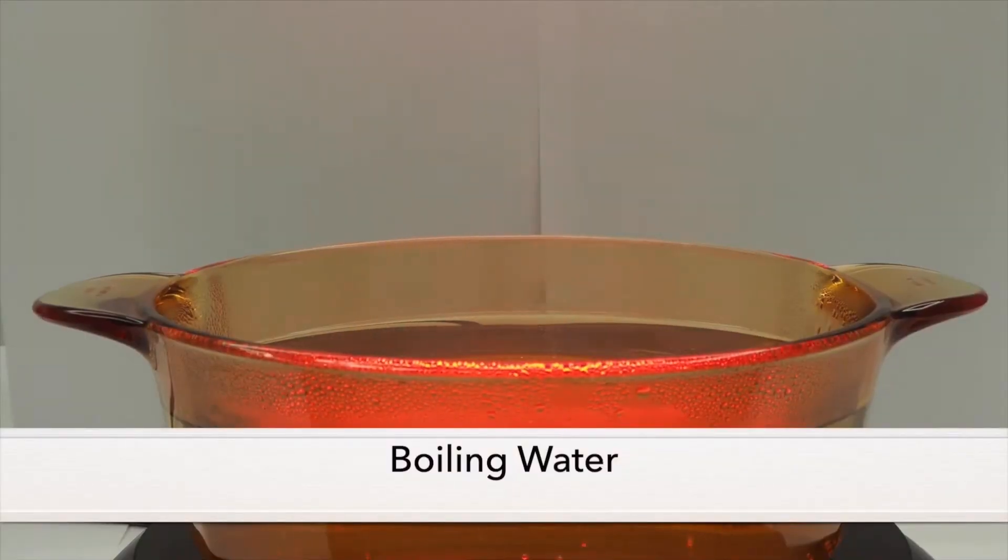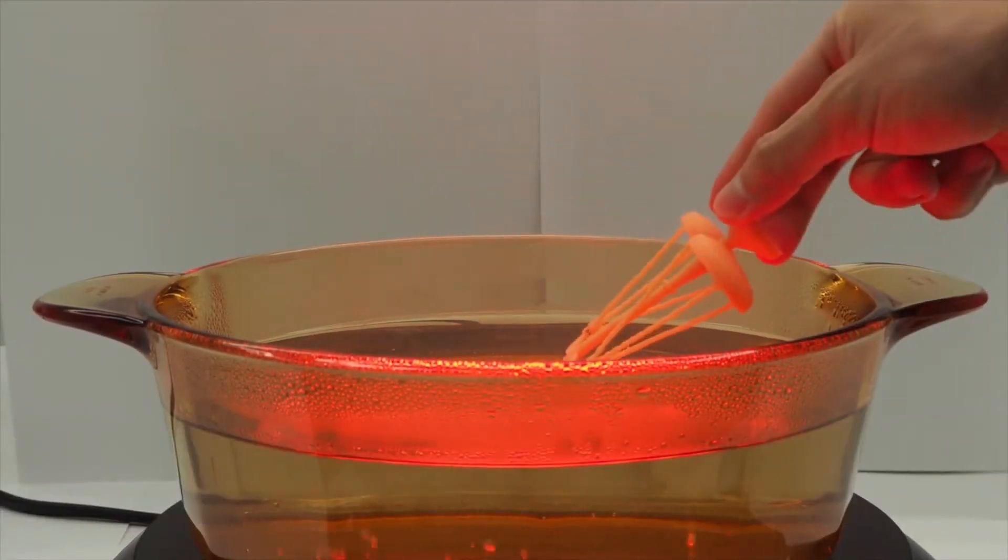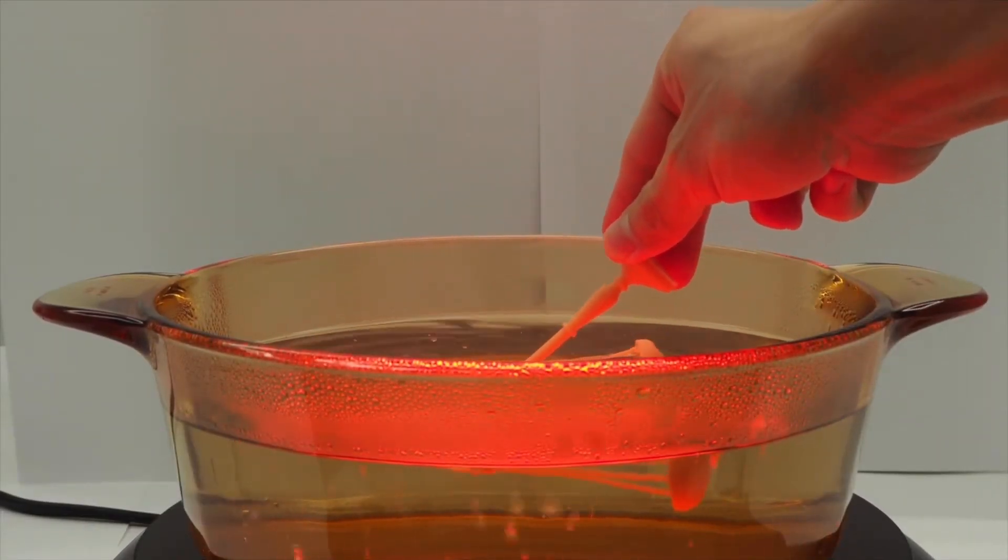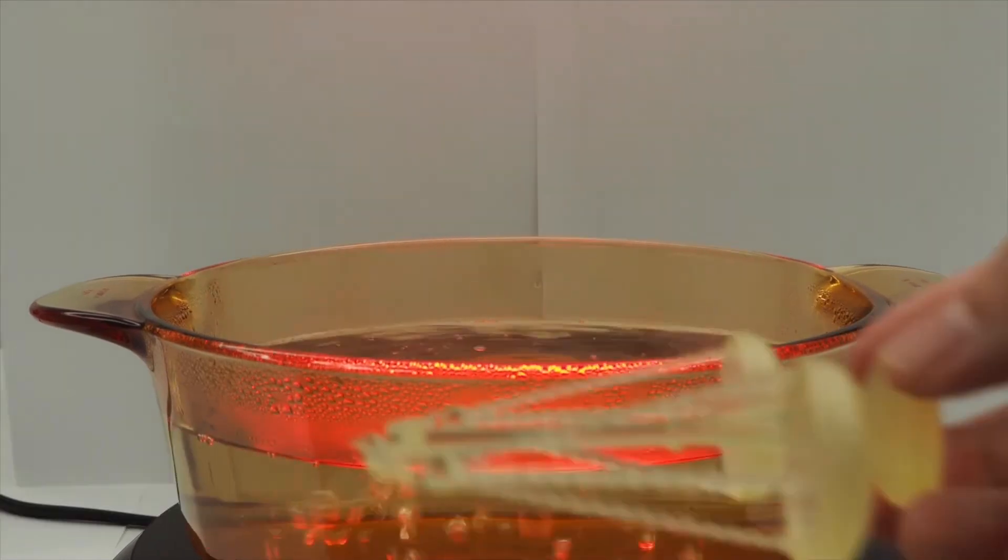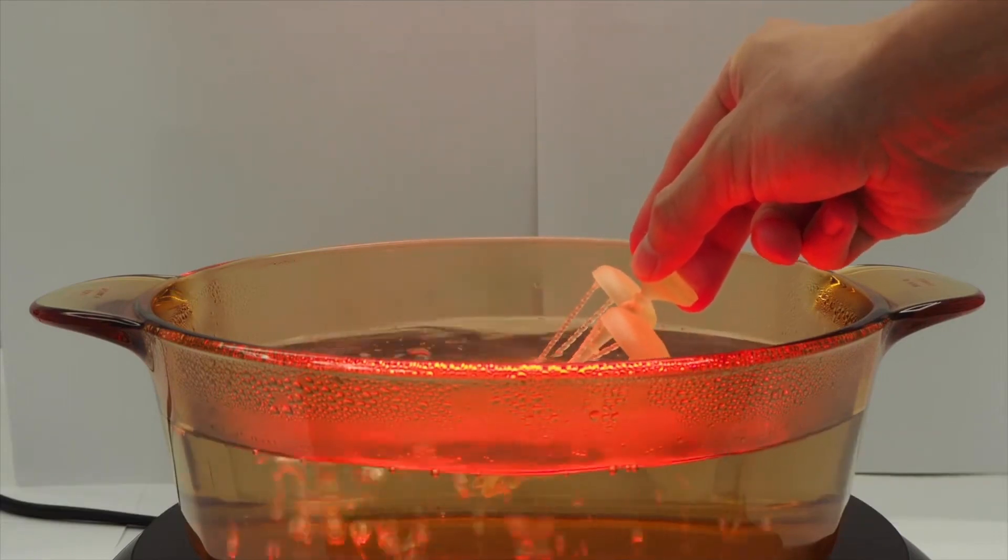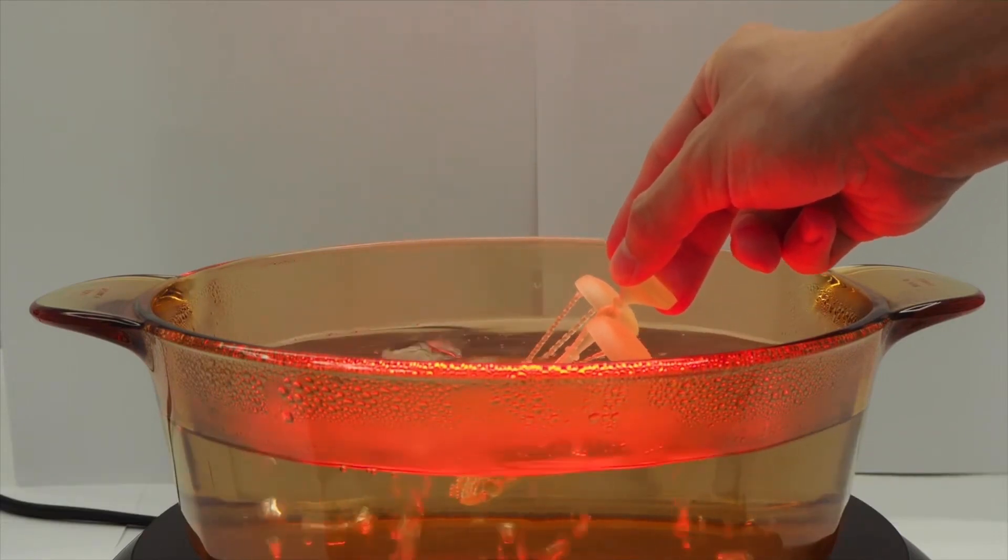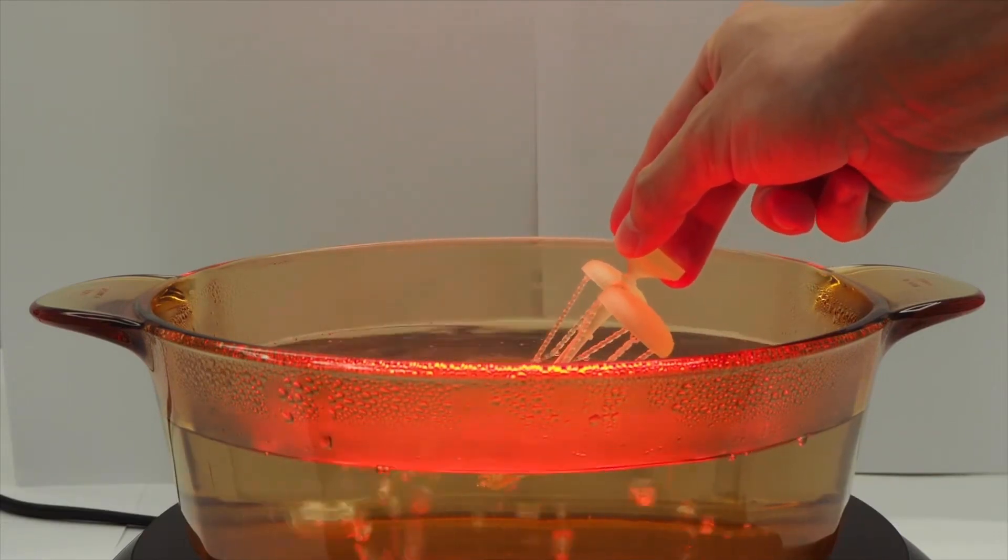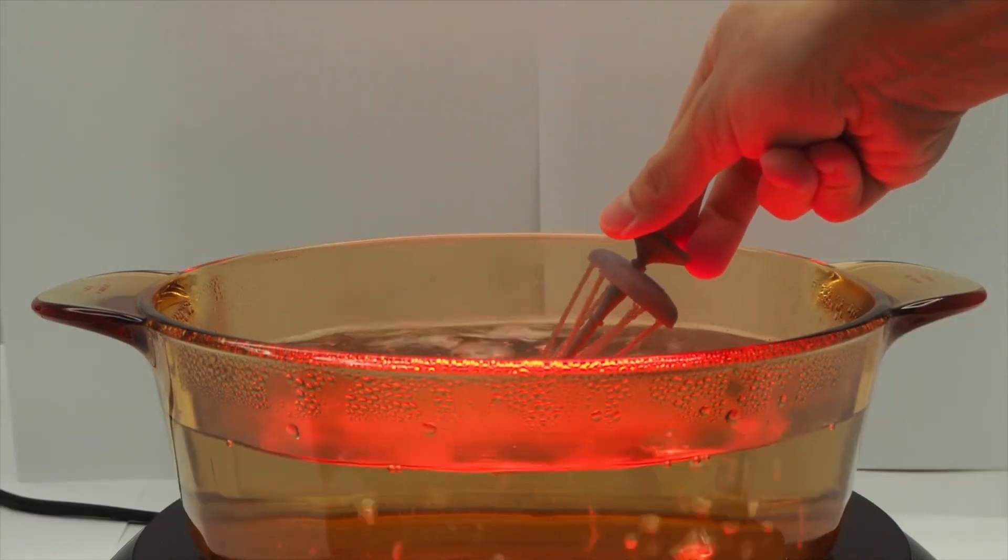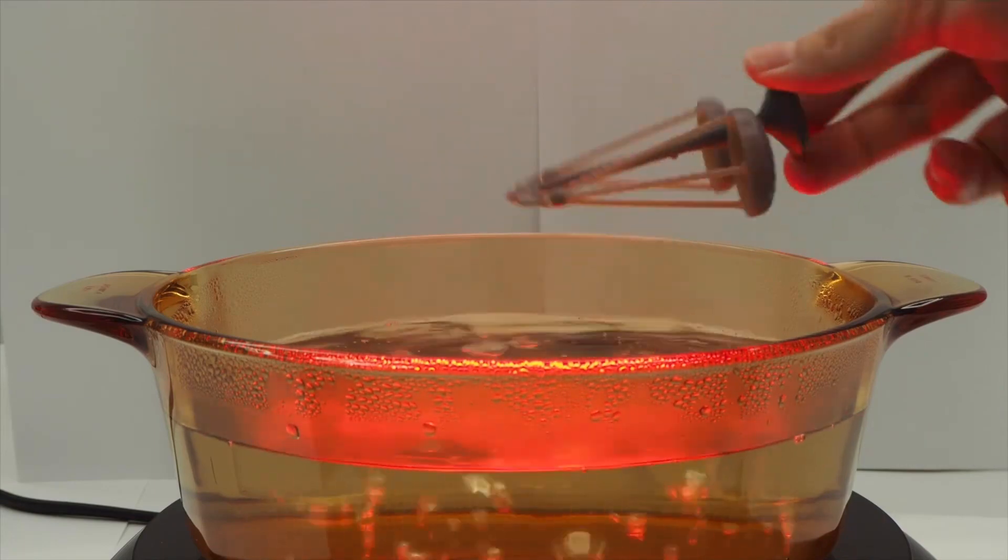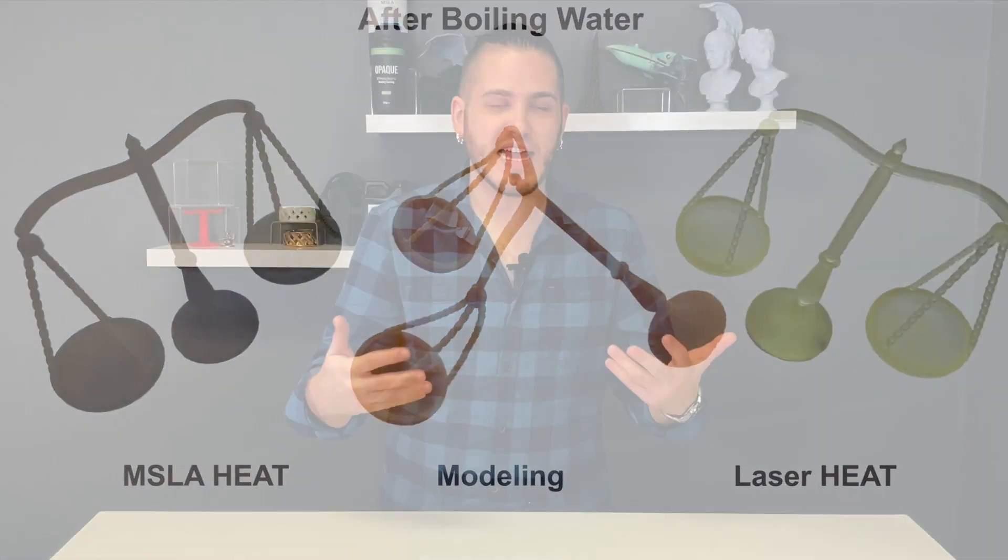They also have a short video comparing a very thinly printed model, it's a I think it was a scale, where it's compared to a Tough resin and then Heat, and they put it in a thing of boiling water. Water boils at 100 Celsius, I believe, and the Tough resin actually got droopy and it just kind of fell apart. The Heat handled it really well, even at those really tiny, we're talking like less than two millimeters, maybe one millimeter sizes, which is of course perfect for our jewelry application.